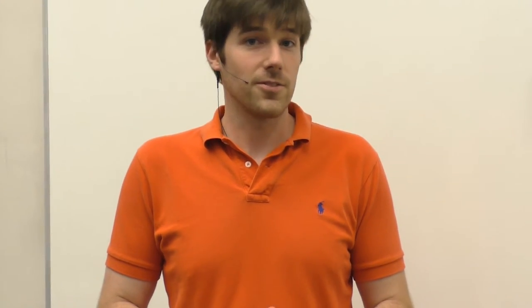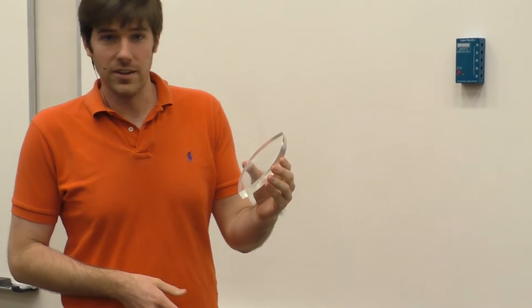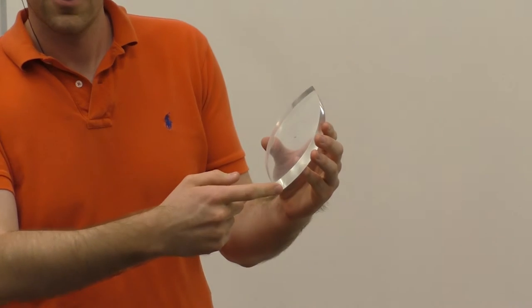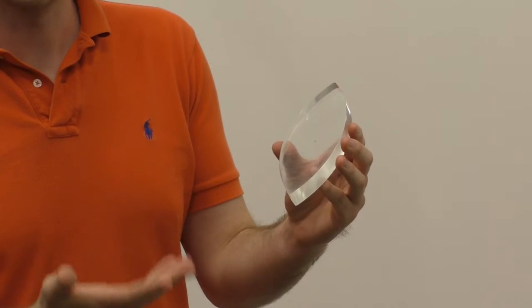In this demonstration, we're going to show how light responds to various lenses of different surface geometries and focal points. For example, the lens that I'm holding in my hand has two surfaces that are curved outward. We refer to this lens as a convex lens.